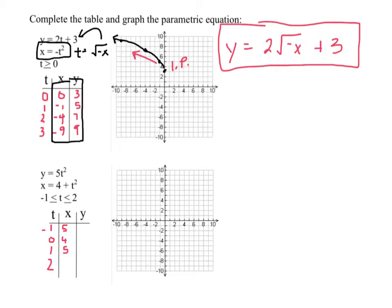The y component is 5t squared, so 5 multiplied by negative 5 squared is 5. This would be 0. This would be 5. This would be 20.